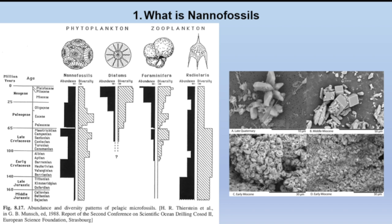Di sebelah kanan bisa dilihat contoh daripada nanofosil dari mulai Quaternary, yaitu saat ini, sampelnya dari ocean atau air laut. Kemudian yang di sebelah kanannya itu adalah yang middle Miosen, dari core sample drilling sedimen yang ada di bawah laut. Selanjutnya ada yang lebih tua, early Miosen. Jadi ini adalah gambaran daripada nanofosil, perbedaan bentukannya di bawah spektrum elektromagnetik, untuk kurang lebih 25 juta tahun yang lalu sampai dengan saat ini.